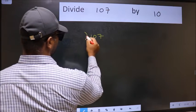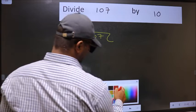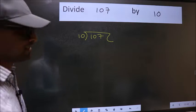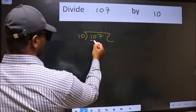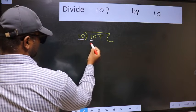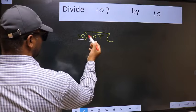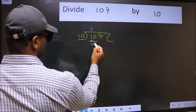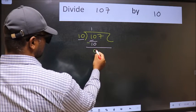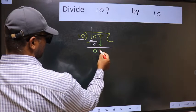107 and 10 here. This is your step 1. Next, here we have 1 and here 10. 1 is smaller than 10, so we should take two numbers, 10. When do we get 10 in 10 table? 10 once 10. Now we should subtract. We get 0. After this, bring down the beside number, so 7 down.